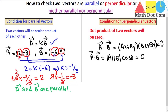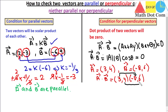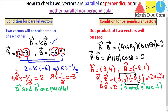Let's say vector a equals (3, 4) and vector b equals (-8, 6). Taking the dot product: (3)(-8) plus (4)(6) equals -24 plus 24 equals zero. The dot product equals zero, so from here we can easily say that vectors a and b are perpendicular to each other.